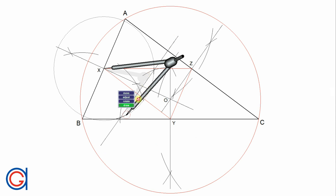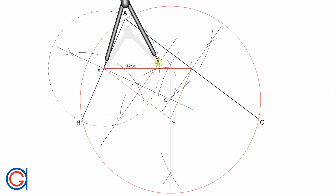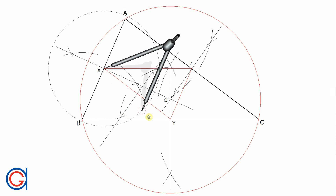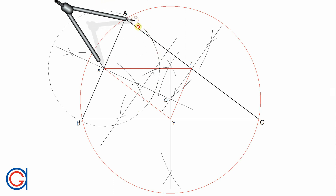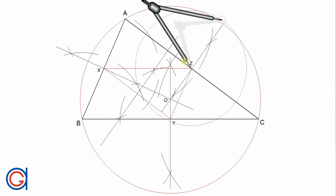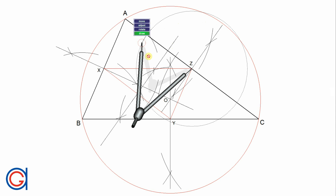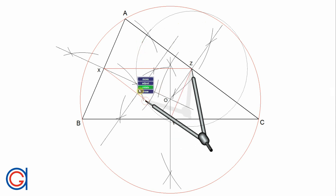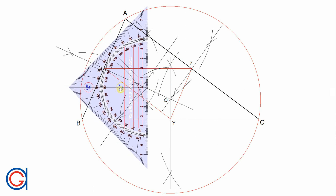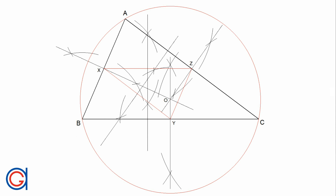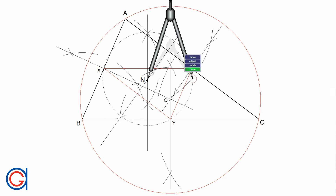Now we work out the perpendicular bisector of XZ. Setting the compass slightly longer than half the length of XZ, we scribe an arc above and below the line. And now with the same radius, setting our compass on Z, we scribe two new arcs intersecting our previously drawn arcs. We join these two intersections with another straight line. Where these two perpendicular bisectors intersect is point N, which is the nine-point center N of the given triangle ABC.